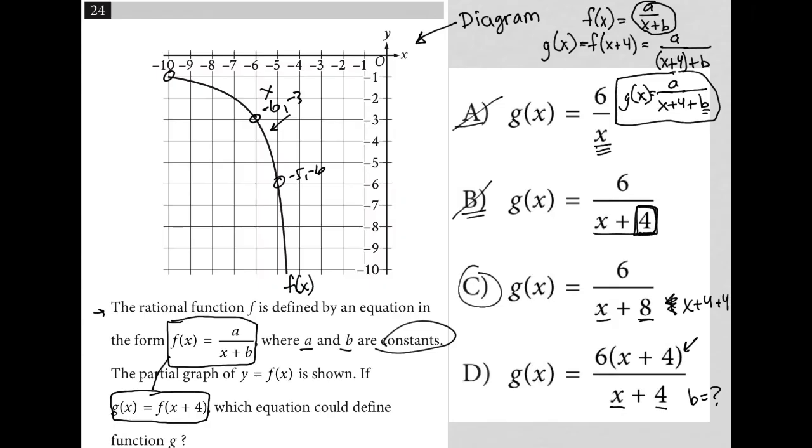So the only answer choice that matches the structure of what I want with having a constant in the numerator, that's like my a value, and then in the denominator having my x plus basically another constant, plus a 4, right, plus another constant, in this case being 4. I don't care why it's 4. It's the only answer choice that fits the structure. So c must be the correct answer.